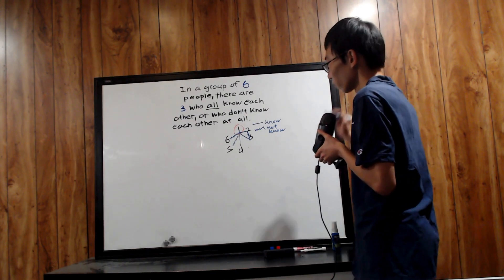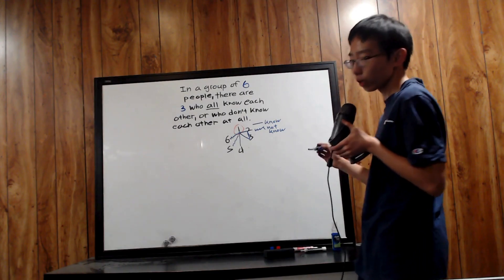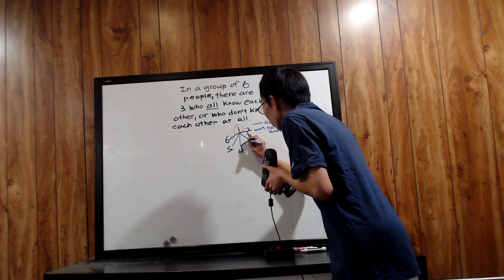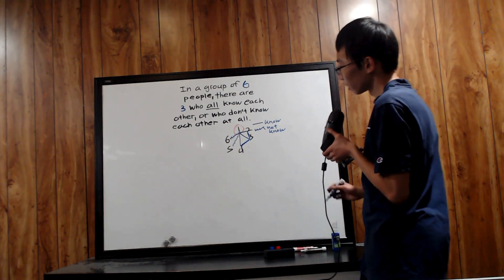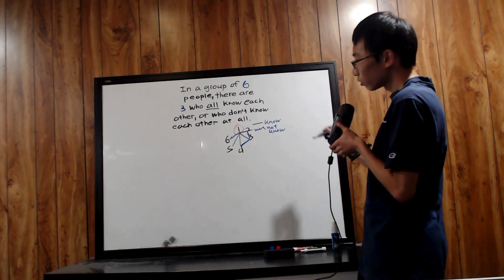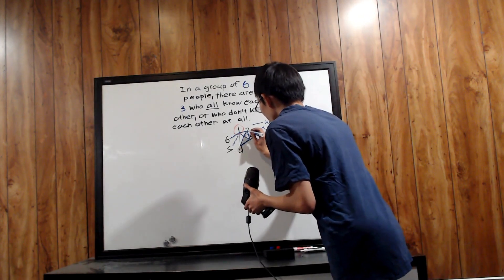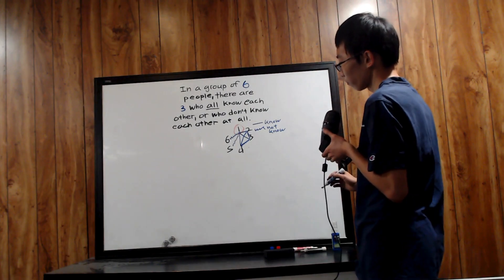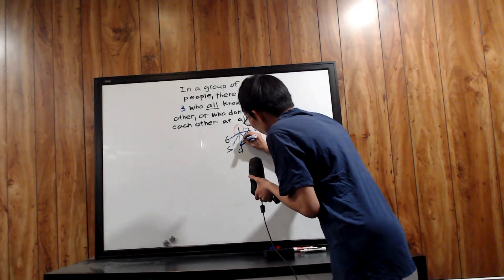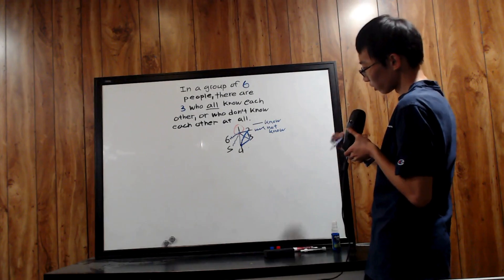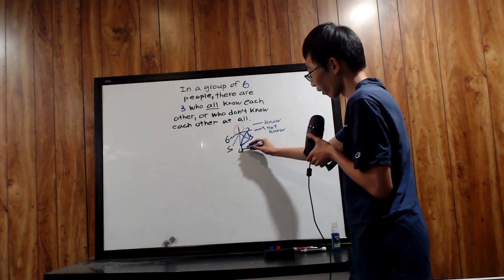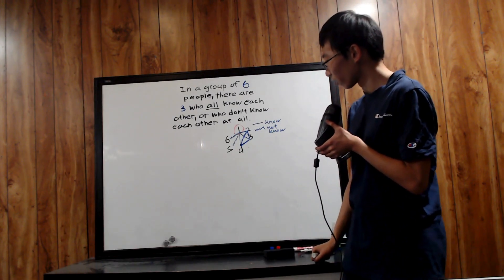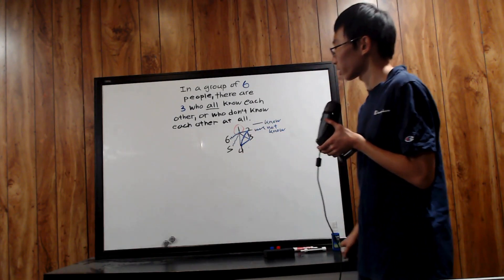If four and three knew each other, that would form a solid-line triangle with one, three, and four. So we draw a crooked line to assume the worst case. Now consider two and four: if two and four knew each other, that would complete a solid-line triangle with one, two, and four — so we connect a crooked line. But then two, three, and four are all connected by crooked lines, forming a crooked-line triangle. So we see that no matter what, this forms a triangle.